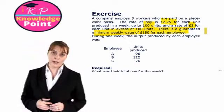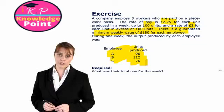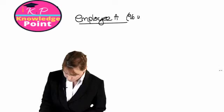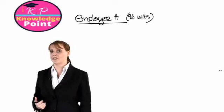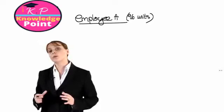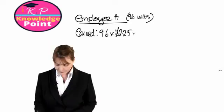Employee A has produced 96 units, and we have been told they will get paid £2.25 for the first 100 units. This employee hasn't gone above the threshold, so our lower rate per unit will apply to all 96. So they have earned 96 by £2.25, which is £216.